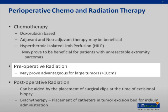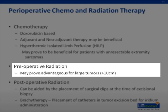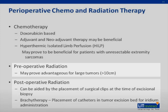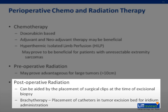With respect to radiation therapy, there may be some advantage to preoperative radiation, usually seen in sarcomas larger in size — some literature cites 10 centimeters as the index number. There may also be a use for postoperative radiation, often in the setting of indeterminate or close margins. Surgical clips are placed at the time of excision to help guide radiation therapy postoperatively. Brachytherapy — used in the treatment of prostate cancers — has also been applied to sarcomas, involving placement of catheters in the tumor excision bed where iridium can be administered in concentrated doses to help reduce residual tumor postoperatively.